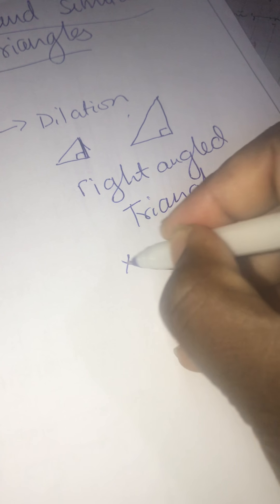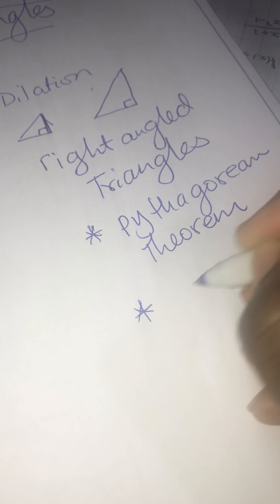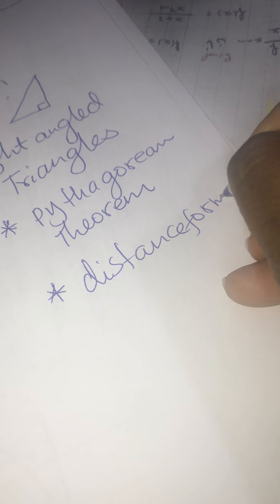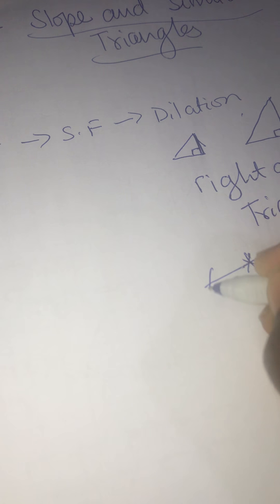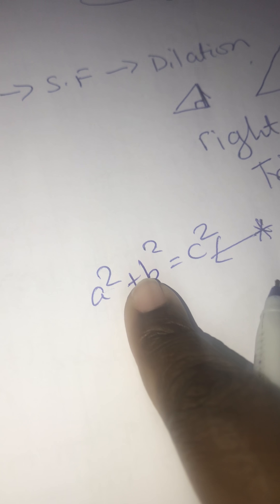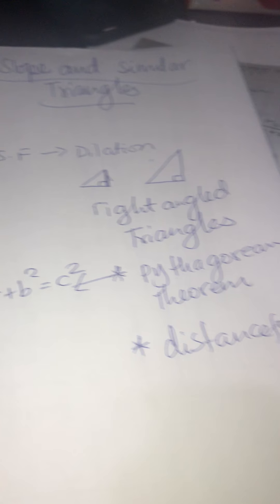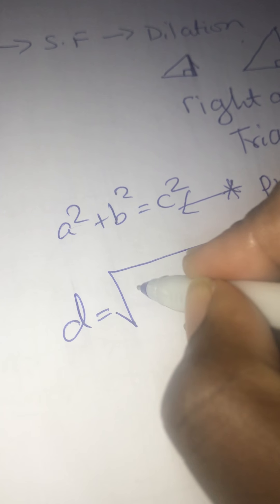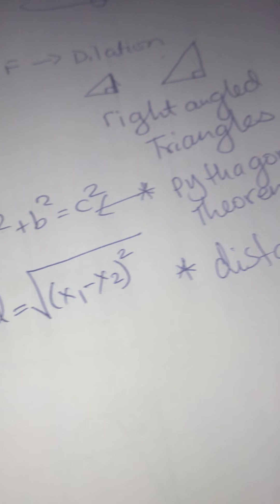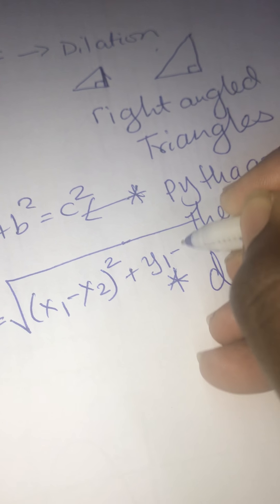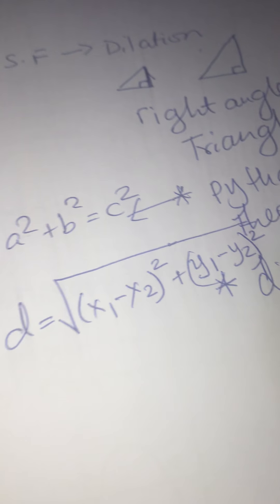Since I have right-angled triangles, I have to remember the Pythagorean theorem — A squared plus B squared equals C squared, which you learned in chapter 5 — and the distance formula: D equals the square root of (X1 minus X2) squared plus (Y1 minus Y2) squared.